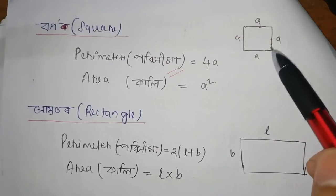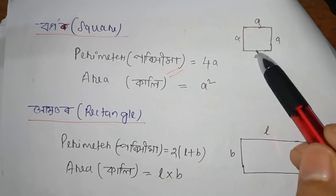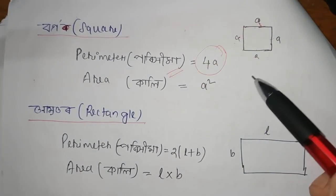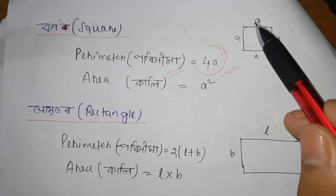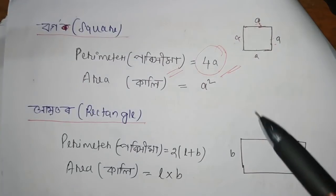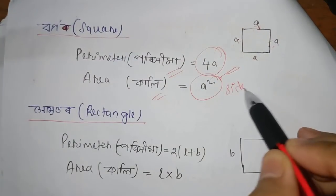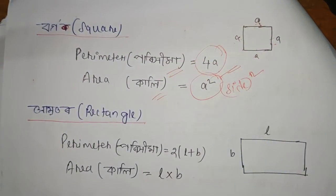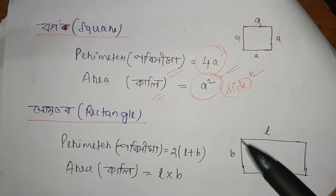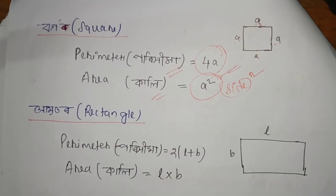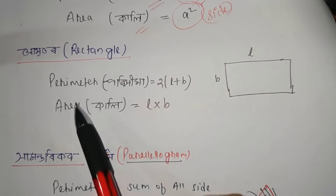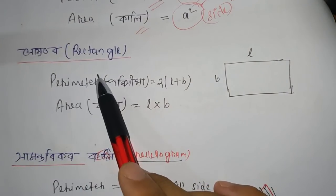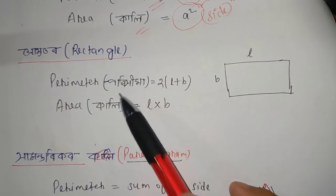4a is equal to a square. The formula gives: a plus a plus a equals 4a. The area formula also uses b by 2.